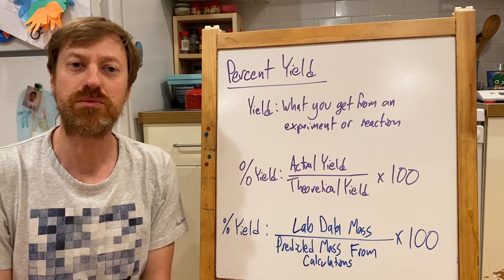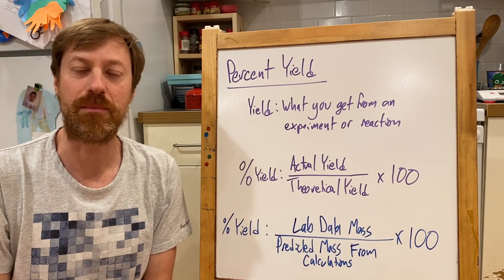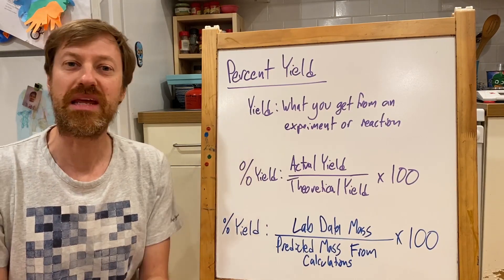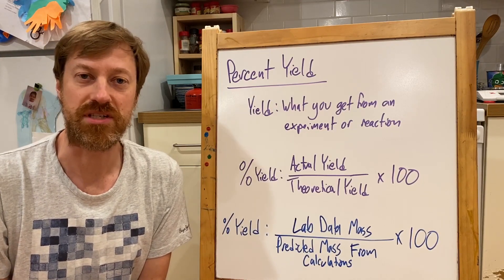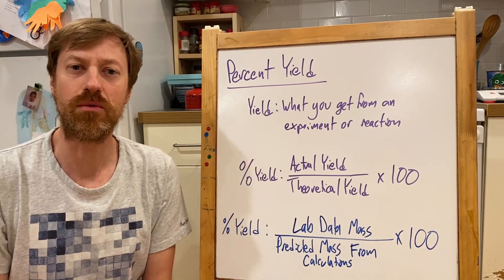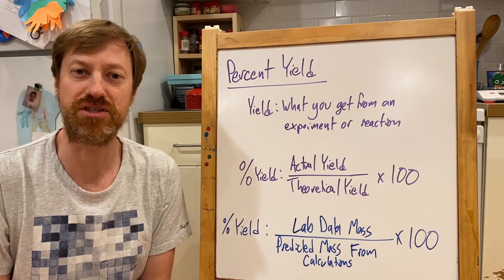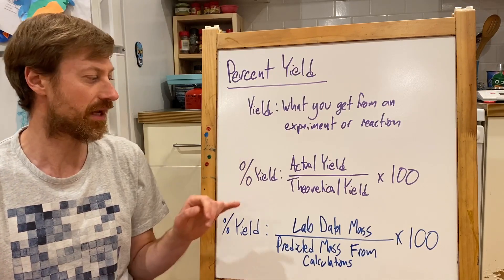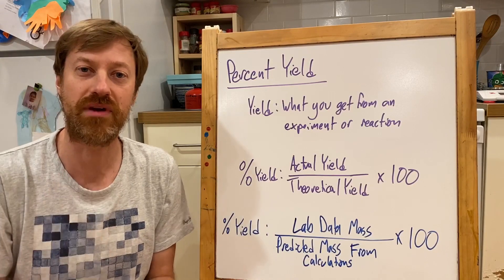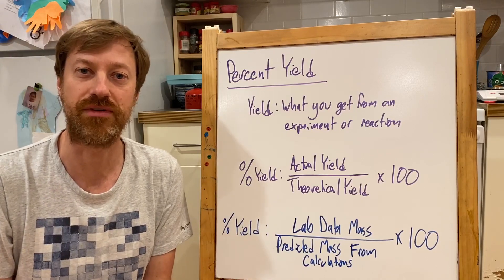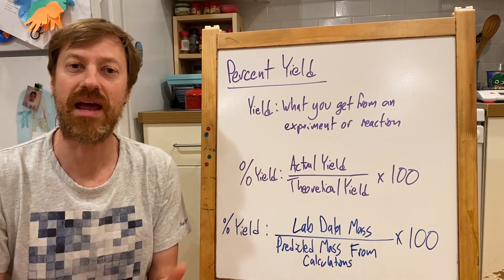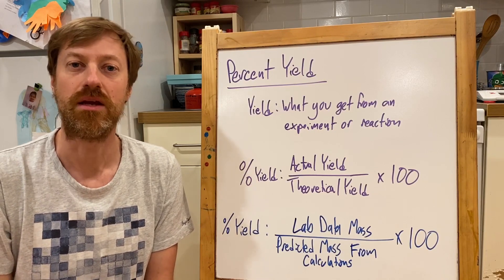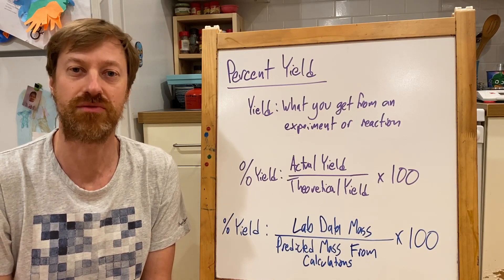For the reaction we're doing in the lab today, the decomposition of baking soda, the percent yield is very close to 100 percent. The way you will determine the correct decomposition reaction of baking soda is going to be to calculate the percent yield for the three reactions that you're figuring out. The reaction that has the percent yield closest to 100 percent is going to be the correct decomposition reaction.